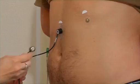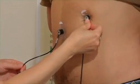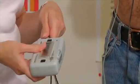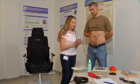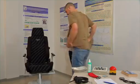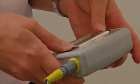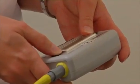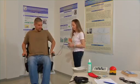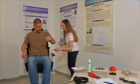Connect the electrodes to the EGG device. Seat the participant in the rotation chair. Start the recording software and store the EGG device in a bag at the back side of the chair. This is important to prevent the cables from getting entangled.